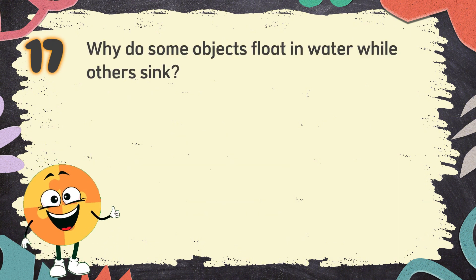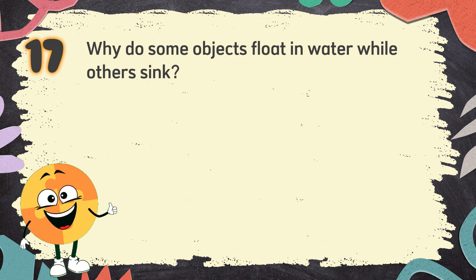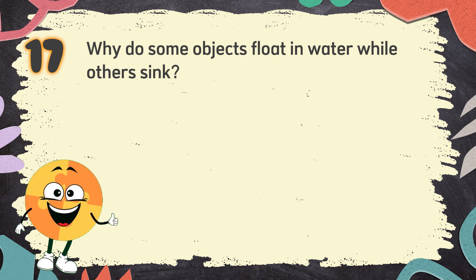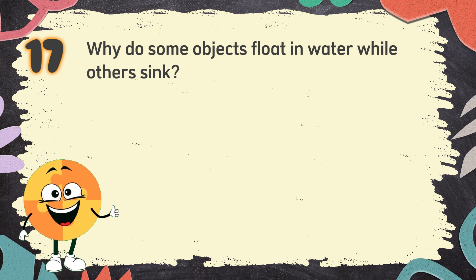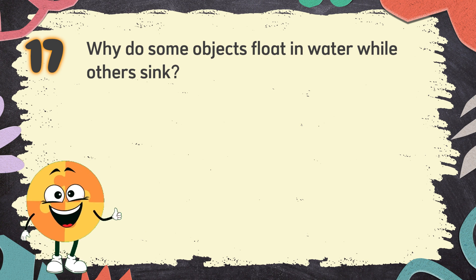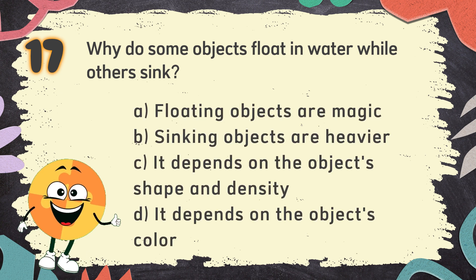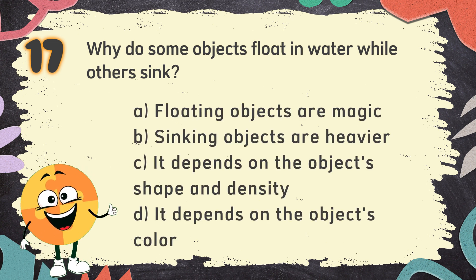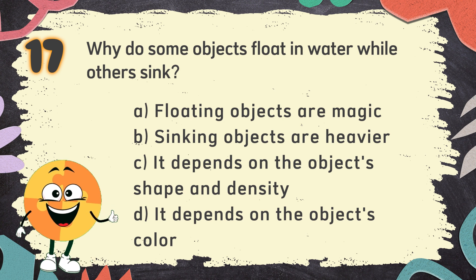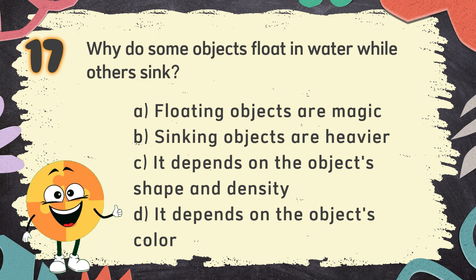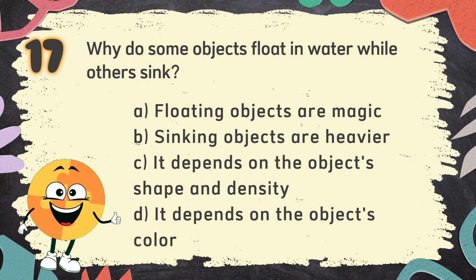Number 17. Why do some objects float in water while others sink? The choices are: A. Floating objects are magic, B. Sinking objects are heavier, C. It depends on the object's shape and density.